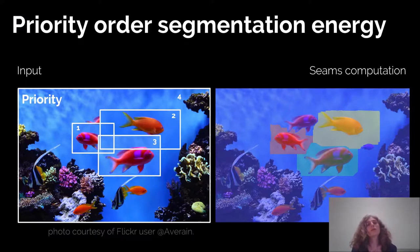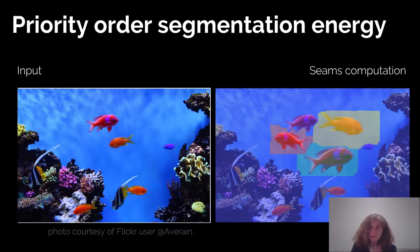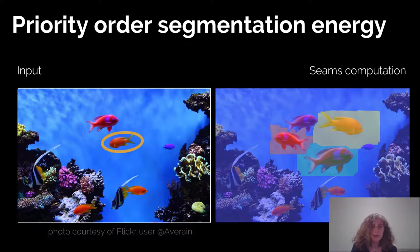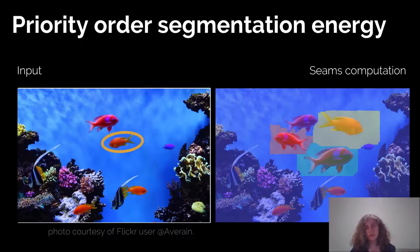You can see results where the layer order is preserved and seams are computed respecting the order with smooth transitions. Note that the layer with the lowest priority — the bottom layer — has the fish disappear completely in order to have smooth transitions and preserve the order.